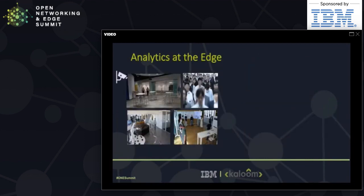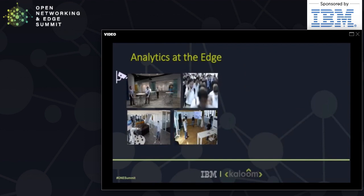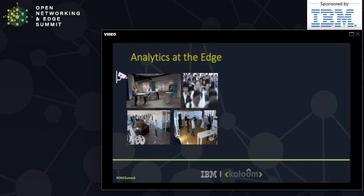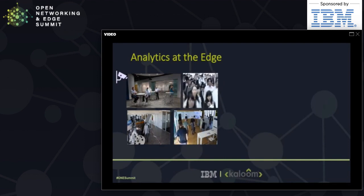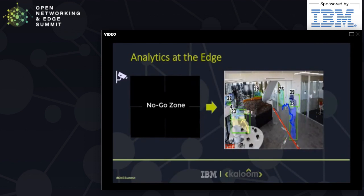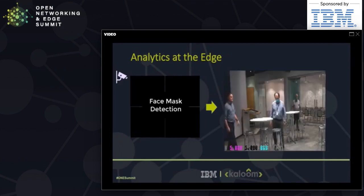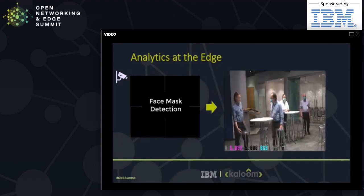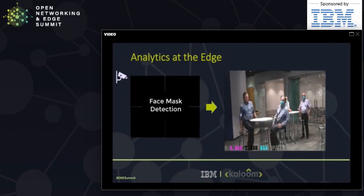Bringing AI to the edge allows action on insights closer to where data is created. Video captured from cameras is sent to the edge for processing and analysis in near real time using IBM video analytics and Maximo Visual Inspection deep learning models. For no-go zone monitoring, once an individual enters an off-limits area — indicated by a red line — an alert is triggered and both the worker and supervisor are notified. Face mask detection uses a deep learning model to determine whether an individual is wearing a mask.